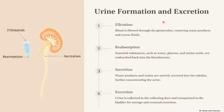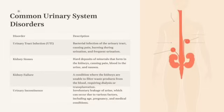In terms of urinary formation and excretion: filtration occurs as blood is filtered in the glomerulus, removing waste products; excess fluid undergoes reabsorption and secretion; and finally the urine is collected in the collecting duct and transported to the bladder for storage and eventually excretion.